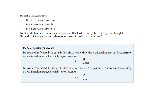If you know the eccentricity, it can actually tell you which conic section you're dealing with. If it's between zero and one, you have an ellipse. If it is one, you have a parabola, and if it's greater than one, you have a hyperbola.